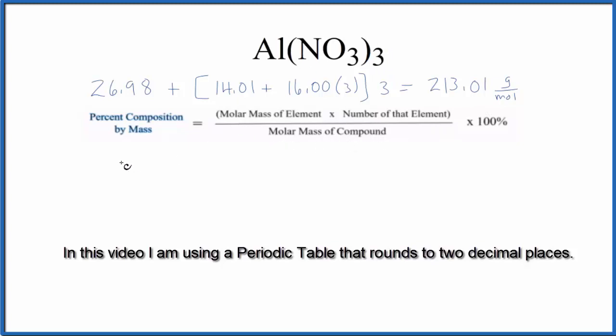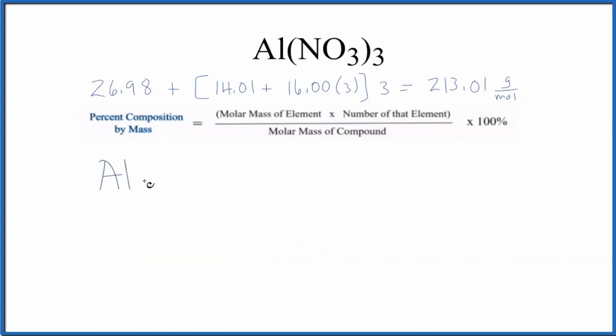Let's do the elements. We'll do aluminum first. For aluminum, on the periodic table, it has an atomic mass of 26.98 grams per mole. We only have one aluminum atom, so the number is 1, so we don't need to put that there.